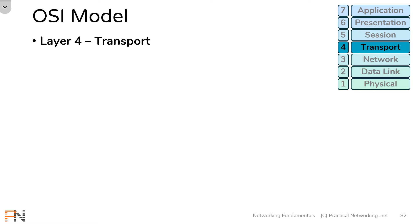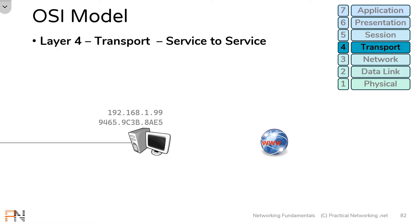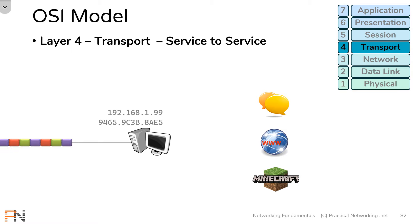The overall goal of the Transport Layer of the OSI model is what I'm going to call Service-to-Service Delivery. Here is a computer with an IP address and a MAC address. In a pretty common scenario, whoever is using this computer has a web browser open and is browsing the web. But maybe at the same time, that user is also running some sort of chat program, something like Slack, Discord, or IRC, and at the very same time, that user might also be running some sort of online game.